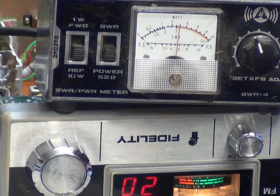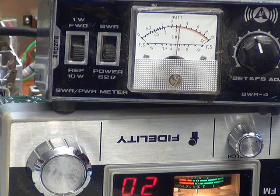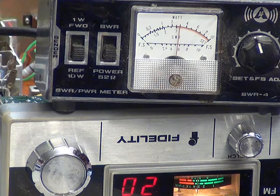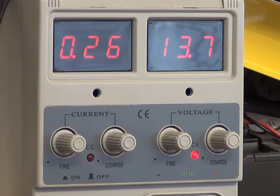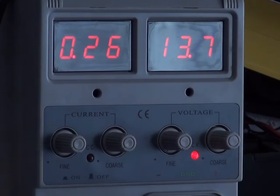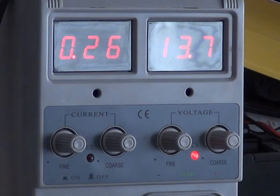The other thing I'll show you is the power supply. We've got an ammeter on that. Unfortunately, there's glare from the fluorescent lights in here on the power supply. As you can see, that's set at 13.7 volts. On standby it's showing 260 milliamps, 0.26.